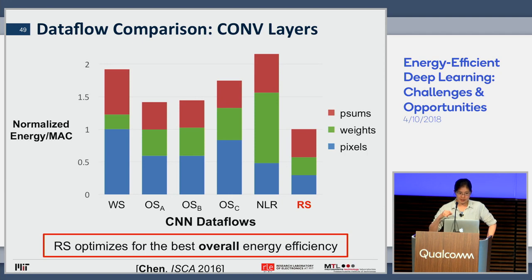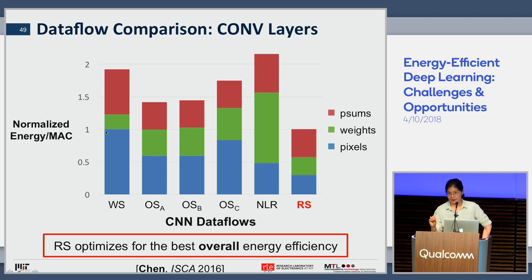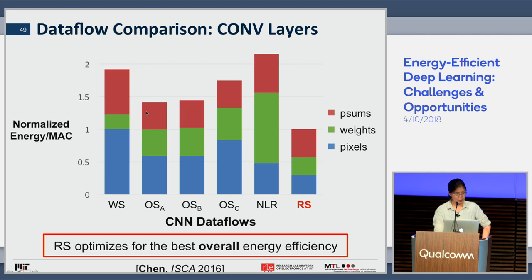Comparing all data flows — weight stationary, output stationary, no local reuse, and row stationary — evaluated on AlexNet with 256 PEs and batch size 16: the ALU energy (multiply-accumulate) is the same across all data flows, as expected — same computation, just different data delivery. The difference is how data reaches the MAC engine. No local reuse has very low DRAM energy by design but high buffer and network-on-chip energy due to heavy on-chip data movement. Row stationary uses about 1.4 to 2.5× lower energy than the other data flows overall, by balancing the energy consumption of weights, pixels, and partial sums rather than optimizing just one data type.